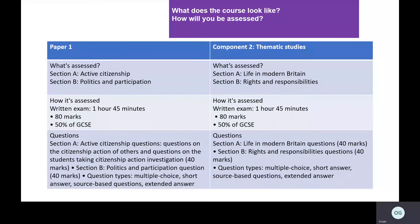So how will you be assessed? There are two papers in GCC Citizenship — Paper 1 and Paper 2. Both are one hour 45 minute papers, each out of 80 marks and equally worth 50% of the GCSE. At the top you can see what's assessed in Section A and B on both papers — the key themes I spoke about in the content. We'll work through exam questions and technique throughout the course, preparing you to answer those questions in Year 10.